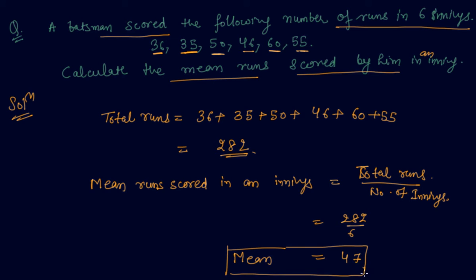Because he is scoring 47 as an average each inning, he is a very good batsman from my point of view. So students, these are the questions which might come into exams to find out the mean of any particular number of observations.